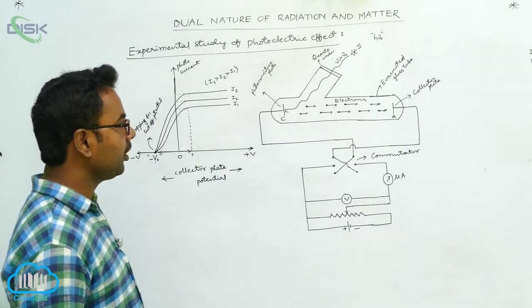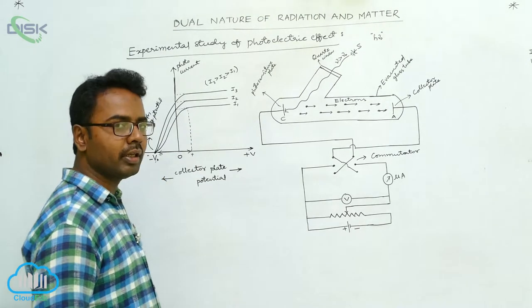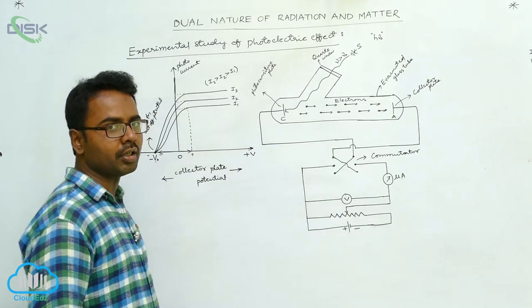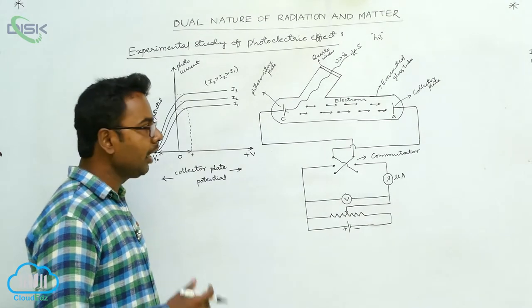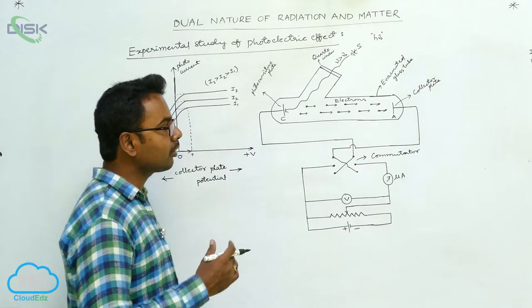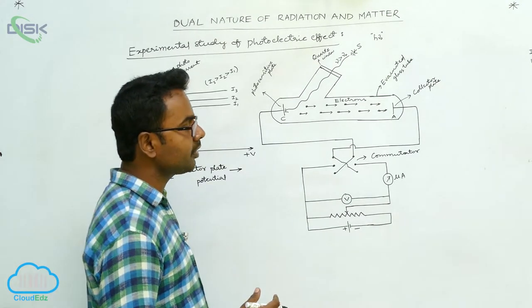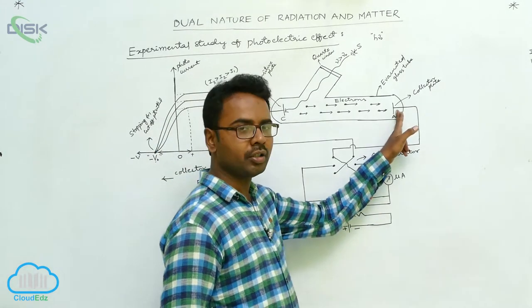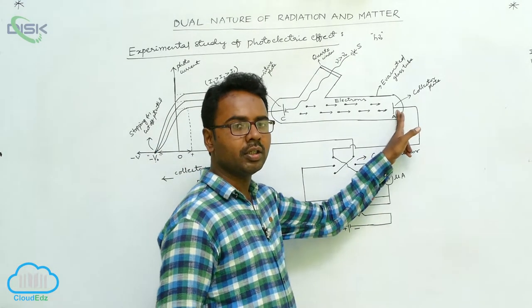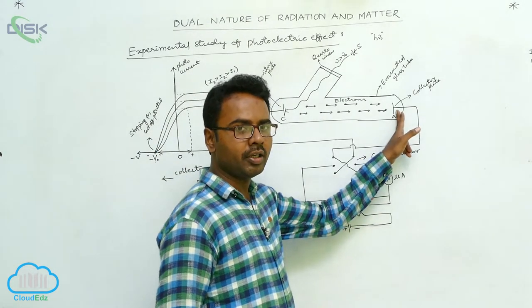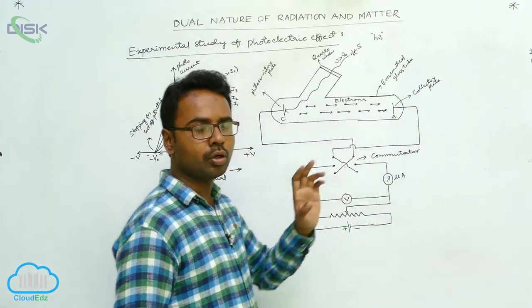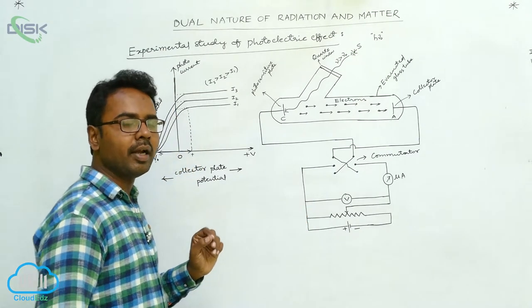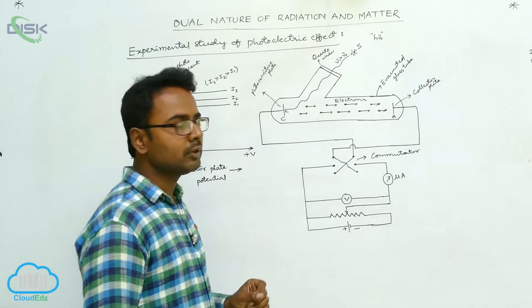The stopping potential is the potential at which all the electrons are stopped and could not reach the collector plate. All the electrons are stopped means the negative potential given to the collector plate is able to stop even the maximum energetic electron.